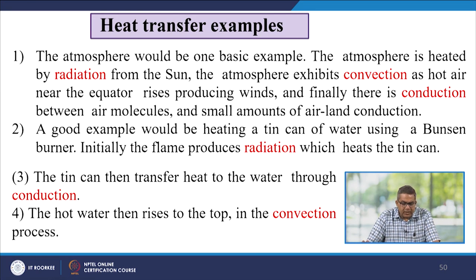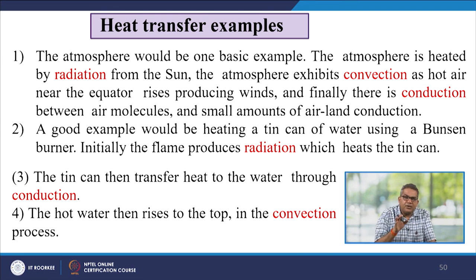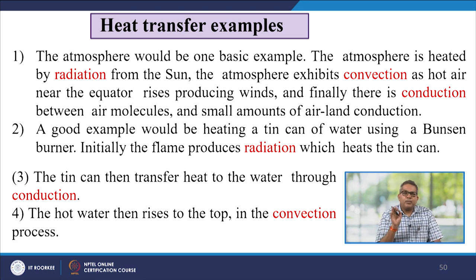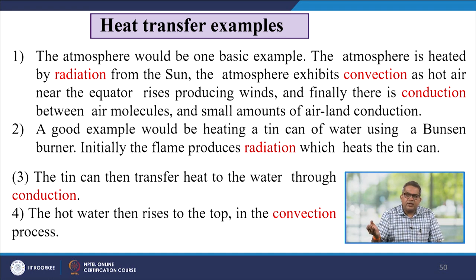Examples combining all modes: the atmosphere is heated by radiation from the sun, exhibits convection as hot air near the equator rises producing winds, and there is conduction between air molecules and a small amount of air–land conduction. Heating a tin can of water using a Bunsen burner: the flame produces radiation which heats the tin can; the tin can transfers heat to the water by conduction; and the hot water then rises to the top by convection.